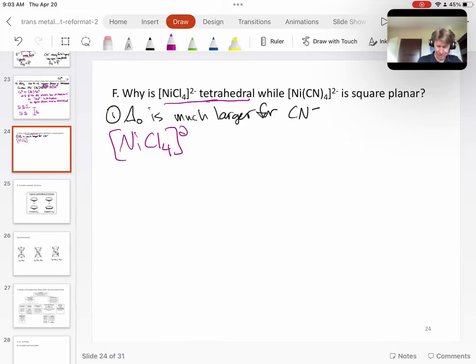No, sorry, that's not the right name of it. Nickel with chloride ligands. And that's going to be two down and three up. In general though, we want to say that delta zero is smaller for this.